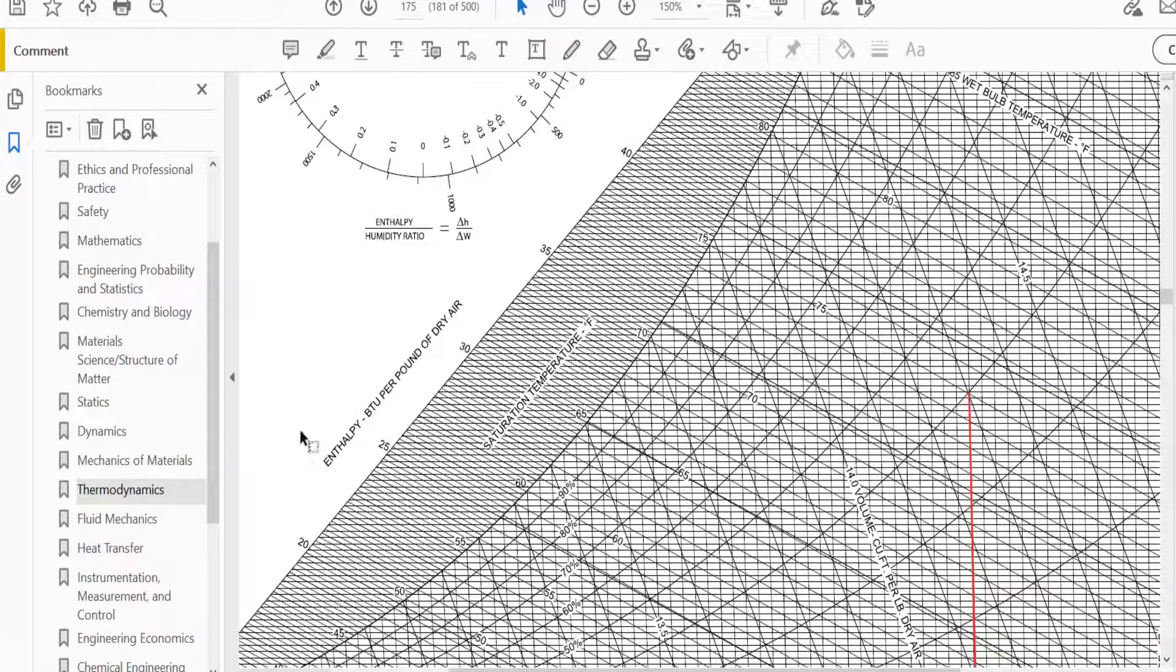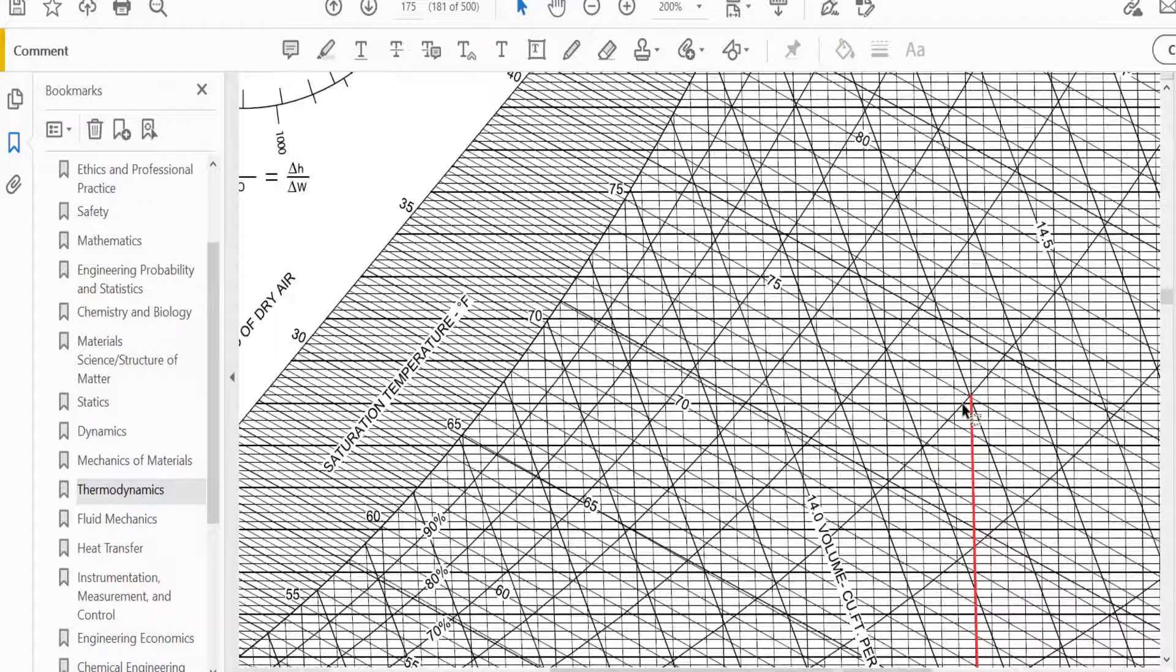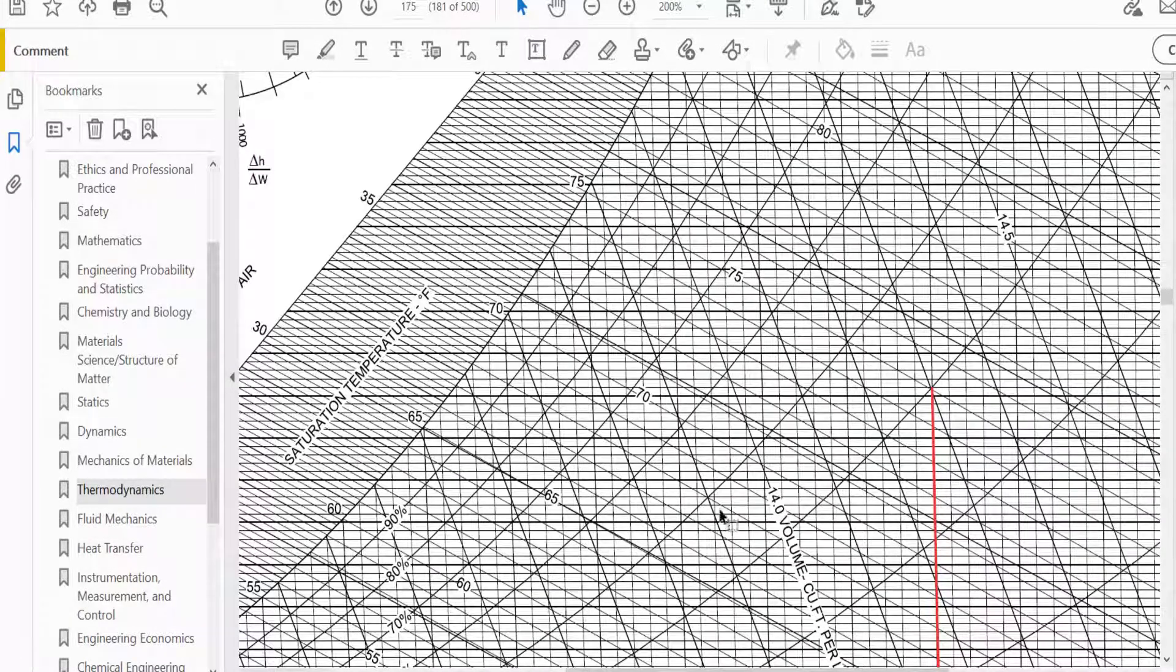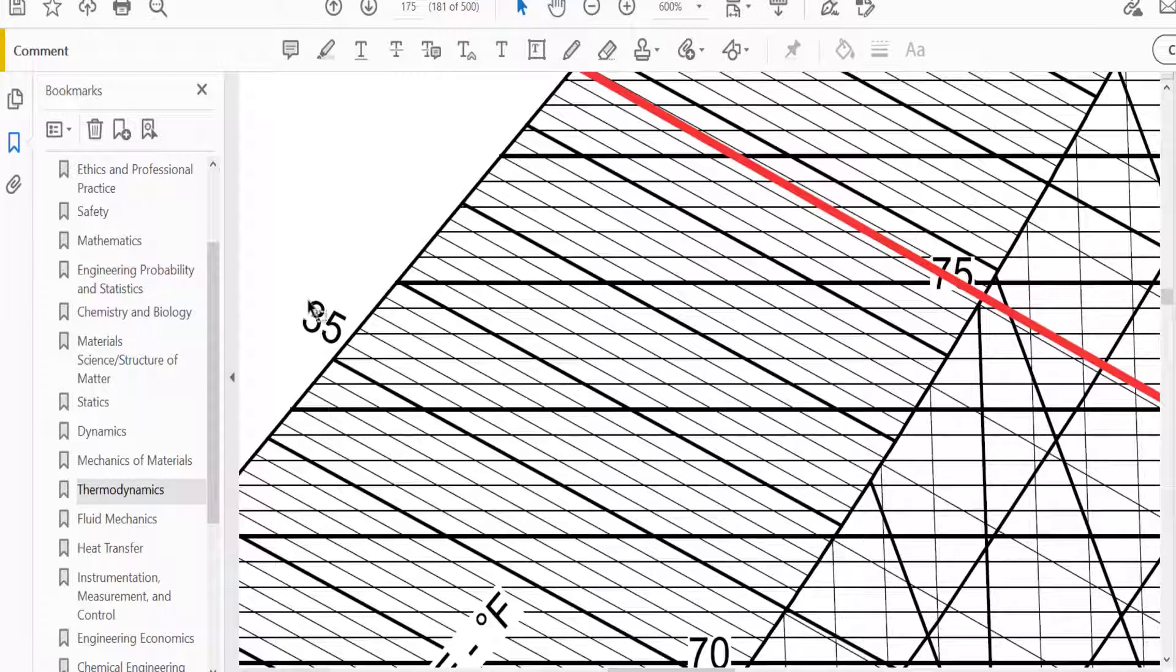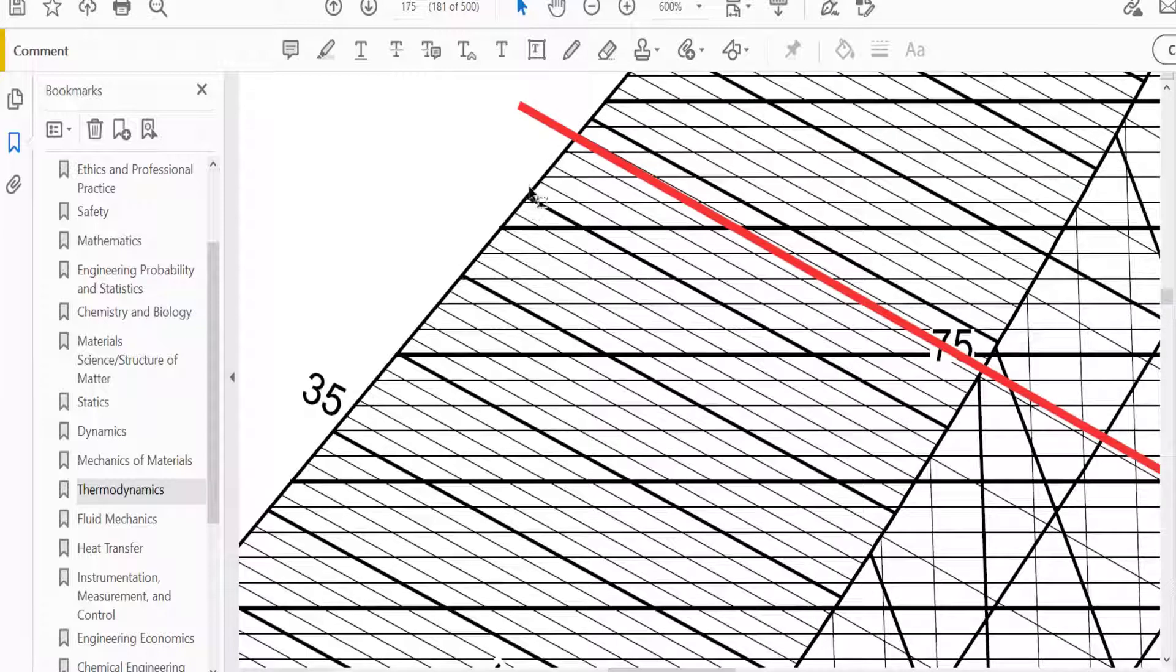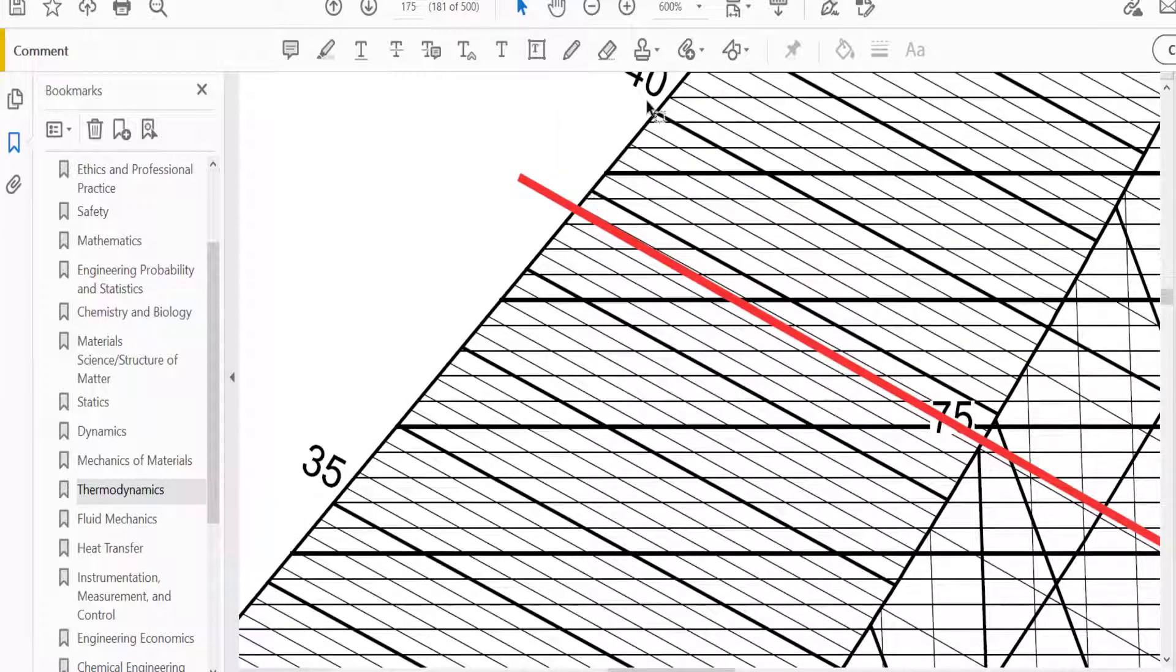For the enthalpy, we can look here. So this is 20, 25, 30, 35, 40. And it's in BTU per pound of dry air. So you can go from there, I'll use the line again. And you can start here and go across until you intersect somewhere there. So we intersect this. So this is 35, this is 36, this is 37, this is going to be 38, this is 39, and this is 40.